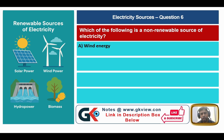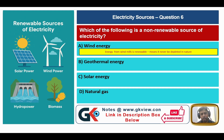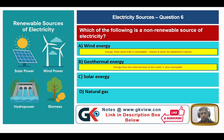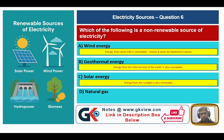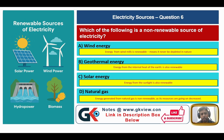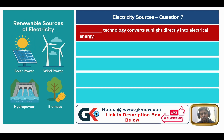Wind energy is renewable — it will always be present in the atmosphere. Geothermal energy, derived from the internal heat of the Earth, is also renewable and everlasting. Solar energy from sunlight is also renewable. Natural gas is non-renewable because its resources will eventually be depleted. So the answer is D, natural gas.